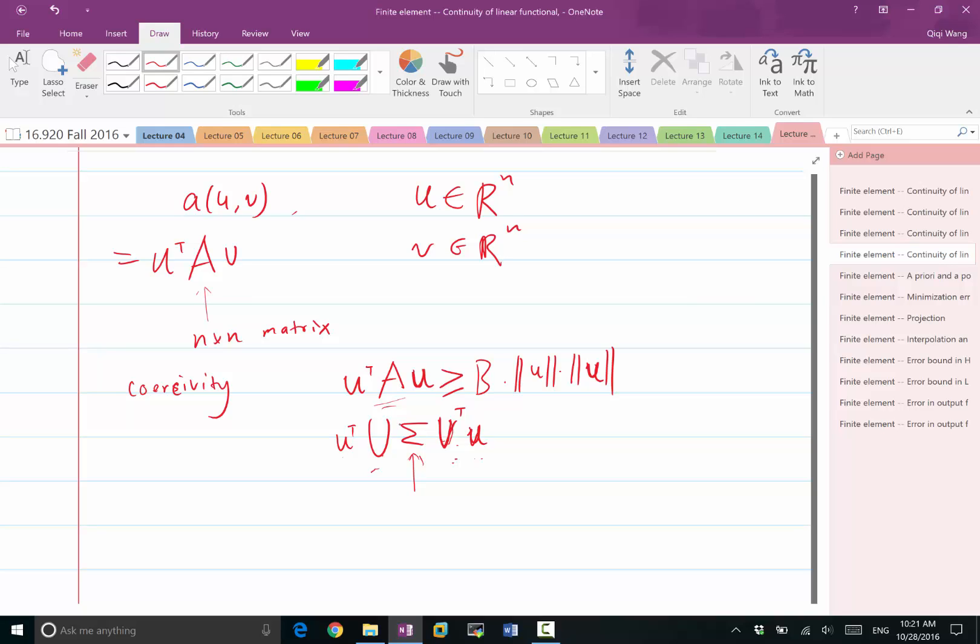We have the bilinear form and the linear functional to be both continuous, and also the bilinear form is coercive.